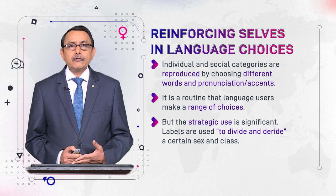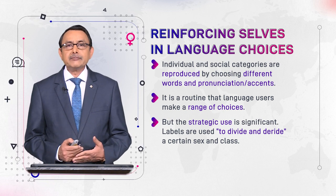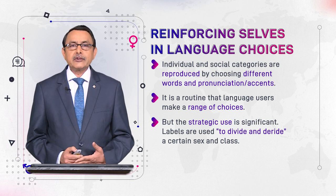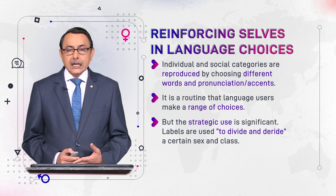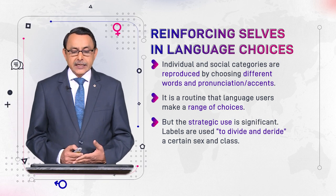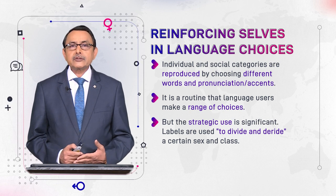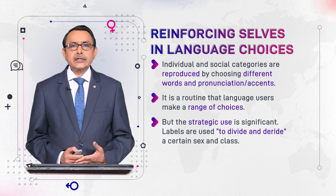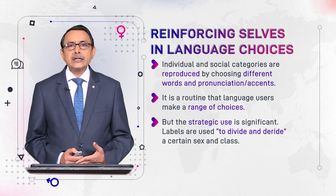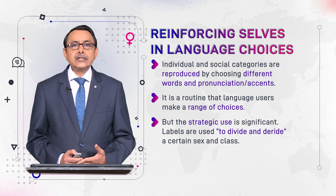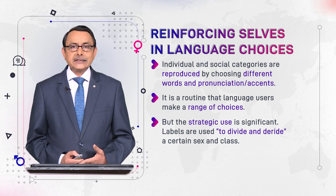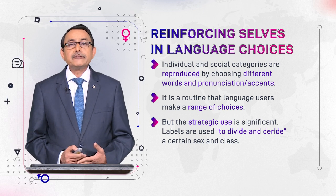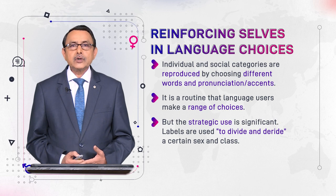When we divide, we associate these labels with certain meanings, and on the basis of those meanings, we deride them, we ridicule them, we make fun of them based on a certain sex and class. On the basis of these labels, we divide people into classes and into males and females — males and females of a particular kind, people of different kinds. This is done through vocabulary.